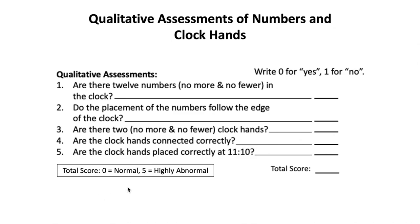The questionnaire that assesses the state of the numbers and the clock hands is currently subjective, using a score of 0 for yes and 1 for no. Eventually we'll turn this into an automated quantitative system, but that's for a future version of CDT Open. Nonetheless, even this semi-quantitative 0 and 1 scoring system can be graphed over time to find patterns.